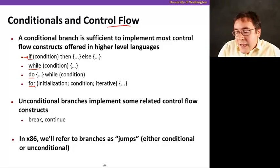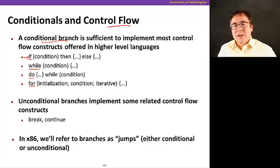A conditional branch instruction, which is a branch that changes the control flow, and if you make the control flow conditional, it turns out that that instruction is sufficient to implement most of the control flow constructs offered in high-level languages like the ones I just told you about.